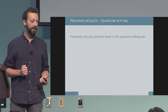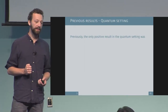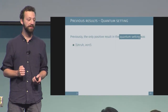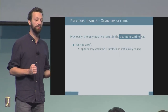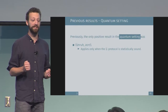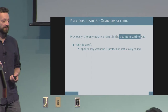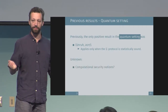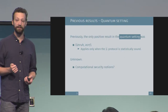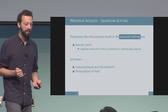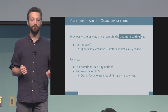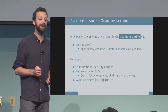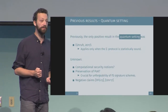Up until recently, the quantum setting looked quite different. We had only one positive result, namely by Dominic Unger in 2017. But this security proof applied only to the case where the underlying Sigma protocol is statistically sound — only one of the possible properties, and actually one that is not typically found in cryptographic applications. For the other properties, the computational ones, it was unknown whether they carry over. Proof of knowledge — which is crucial when proving unforgeability for Fiat-Shamir signatures — was also unknown. And to make matters worse, there were even some negative claims regarding the possibility of a security proof for these properties.